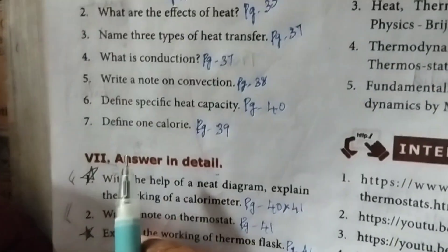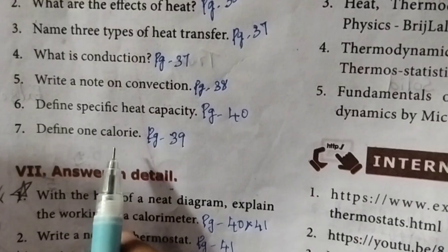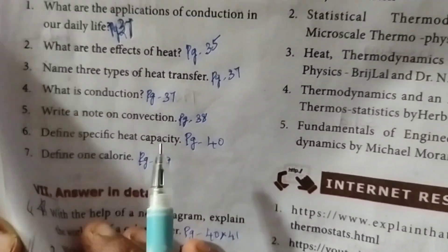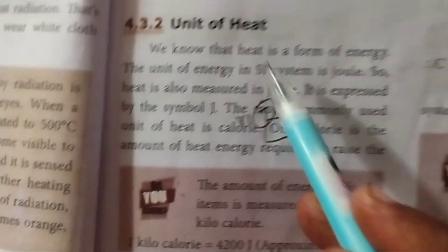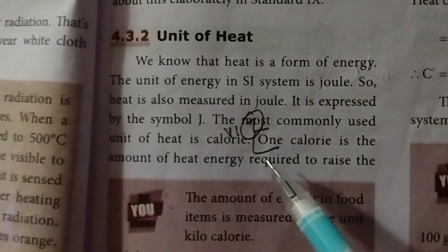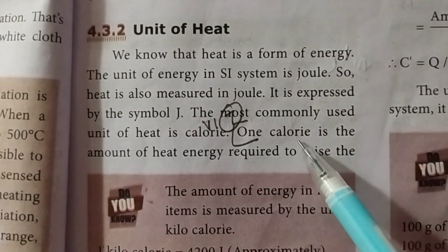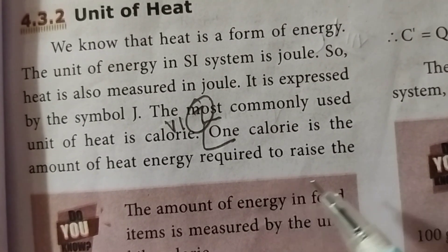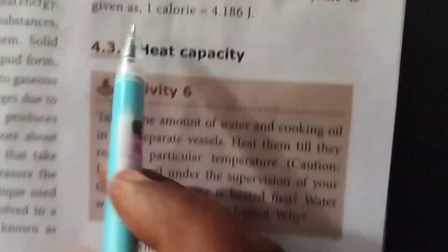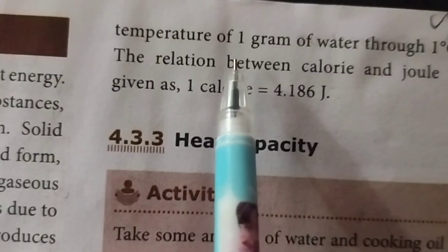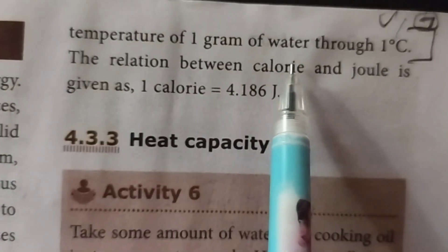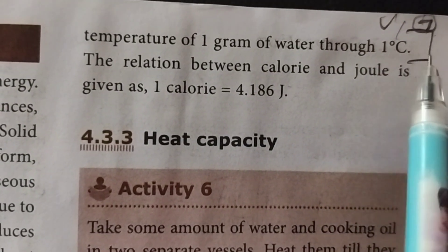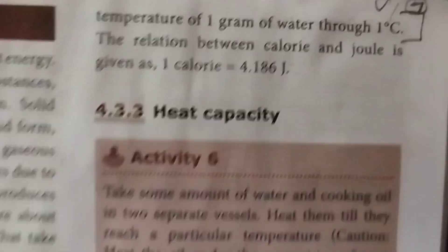Seventh question: define one calorie. Page number 39. One calorie is the amount of heat energy required to raise the temperature of 1 gram of water through 1 degree Celsius. This is the seventh question.